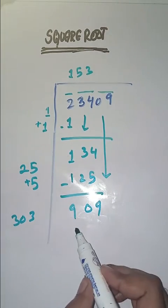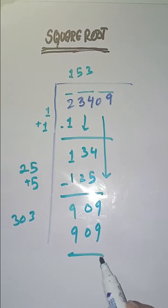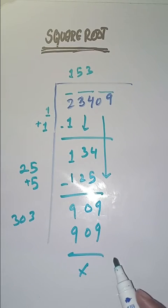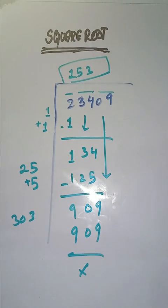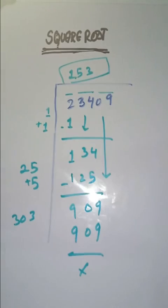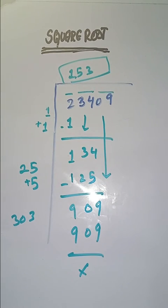So square root of 23409 is 153. Hopefully you like this video. If you really did, please like, share, and subscribe my YouTube channel. If you have any question, you can ask in the comment section. Thank you.